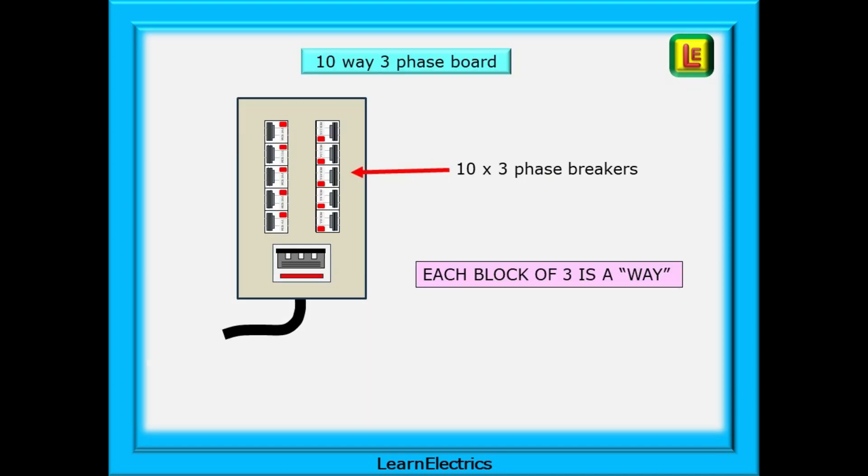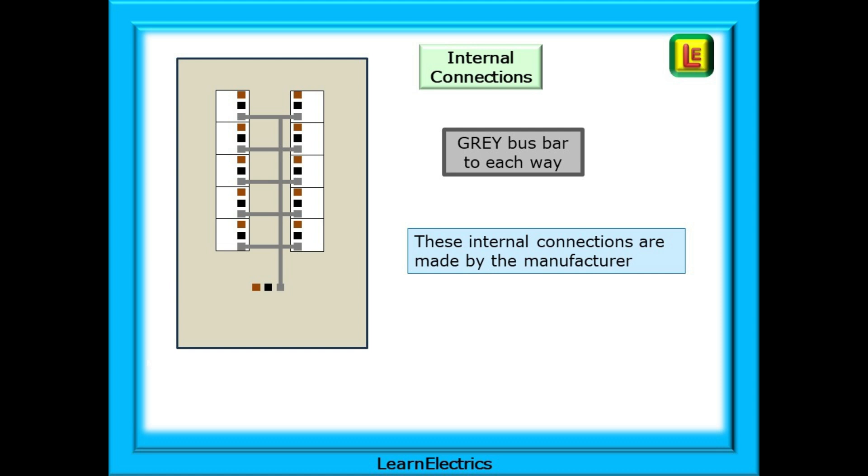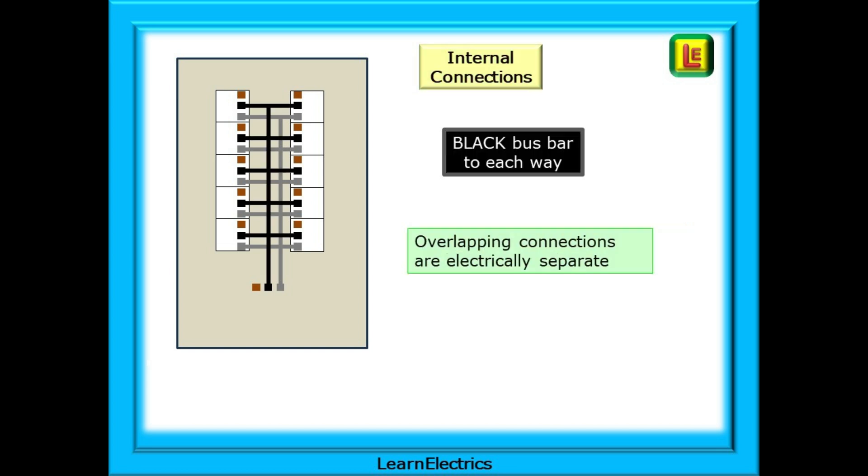This is a ten-way three-phase board. It will accommodate ten three-phase breakers, each block of three being a way. Let's look at the manufacturer's internal connections inside the board. These are usually covered because we don't need access to these electrical parts. The grey bus bar will supply a connection to the grey terminals at each way. Then we have a black bus bar, one connection to each way. The overlapping connections are electrically separate from each other, all done by the board manufacturer. And finally, the brown bus bar.